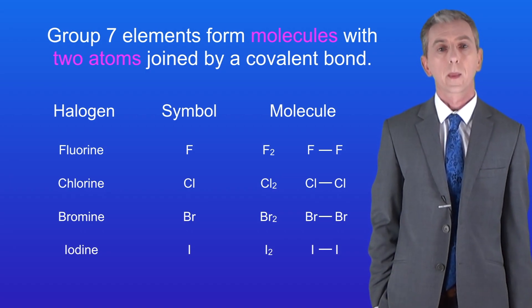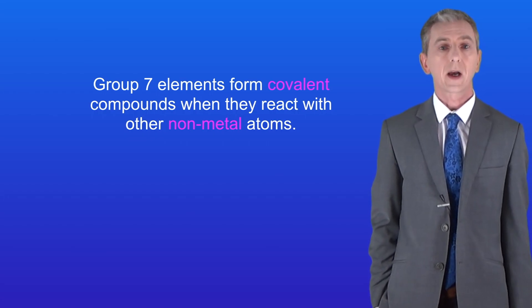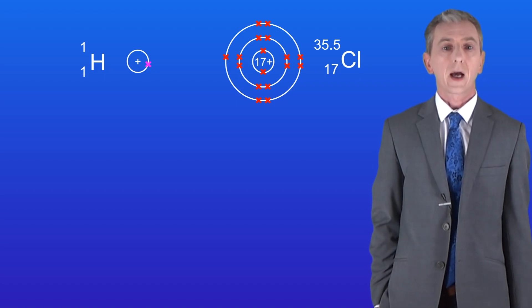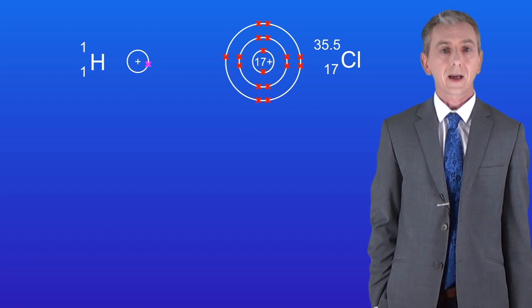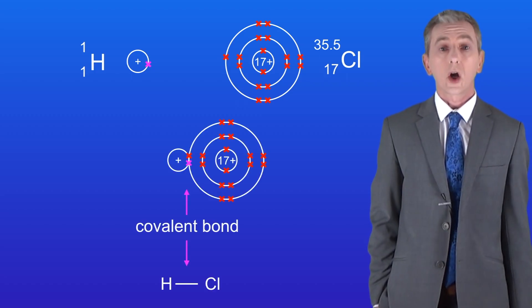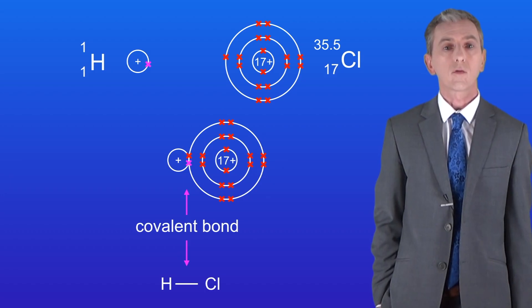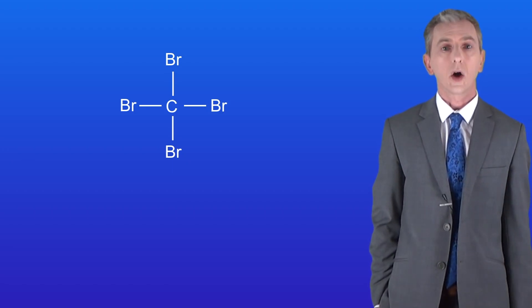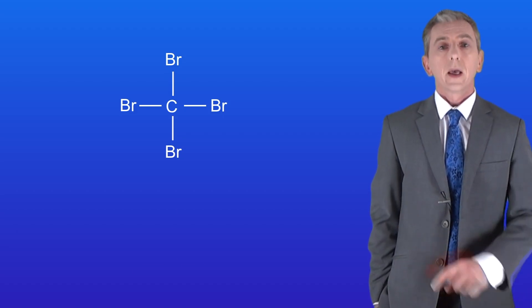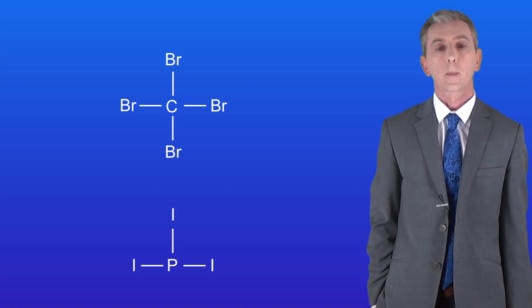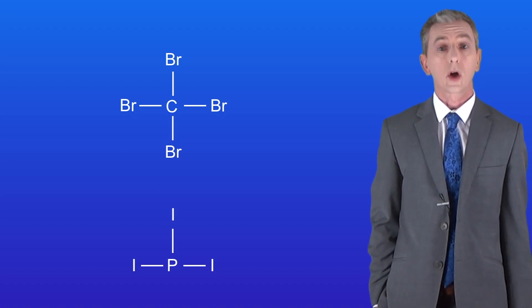Here's a key fact to learn: Group 7 elements form covalent compounds when they react with other non-metal atoms. Here's a chlorine atom reacting with a hydrogen atom — remember that hydrogen is a non-metal. Both elements need one electron to complete their outer energy level, so they form a single covalent bond, making the covalent compound hydrogen chloride. All Group 7 elements form covalent compounds with other non-metals, such as bromine with carbon, and iodine with phosphorus — both are covalent compounds.